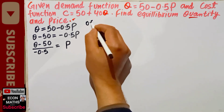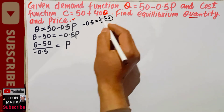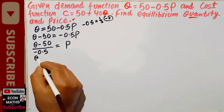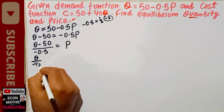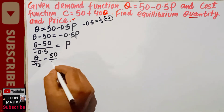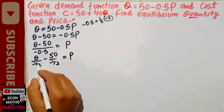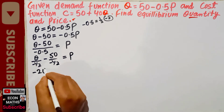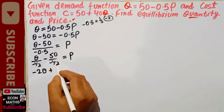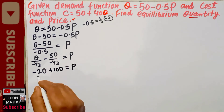Since 0.5 equals 1/2, dividing by minus 0.5 is the same as multiplying by minus 2. So Q divided by minus 1/2 gives minus 2Q, and minus 50 divided by minus 1/2 gives plus 100. Therefore our price function is P = 100 minus 2Q.